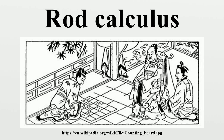Zeros are represented by a space, which serves both as a number and a placeholder value. Unlike in Arabic numerals, there is no specific symbol to represent zero. Song mathematicians used red to represent positive numbers and black for negative numbers; another way is to add a slash to the last place to show that the number is negative.